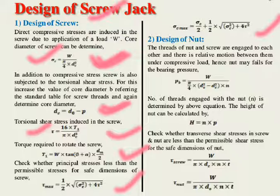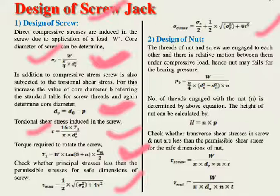To summarize the screw design procedure: first, calculate dc from the compressive stress formula. If torsional stress is also present, compare dc from both formulas and take the greater value. Then calculate τ using the torsional formula. Finally, compute τ_max and σc_max and compare with permissible data book values to verify the design is safe.